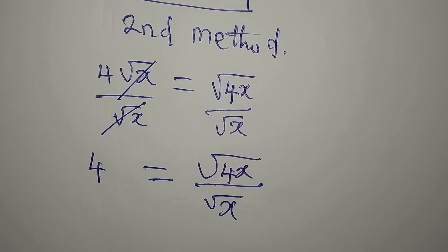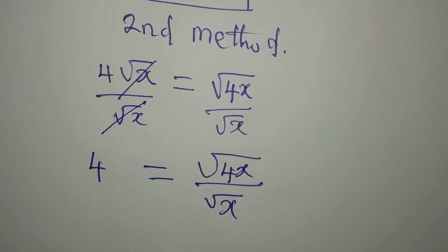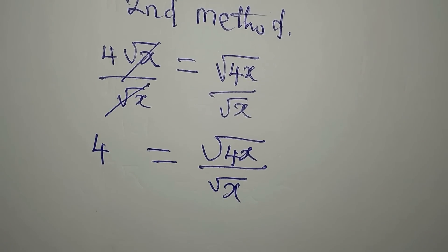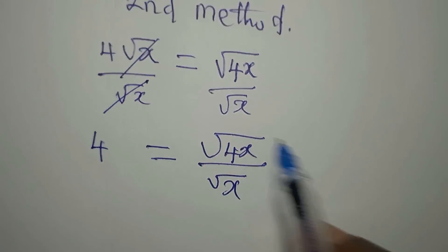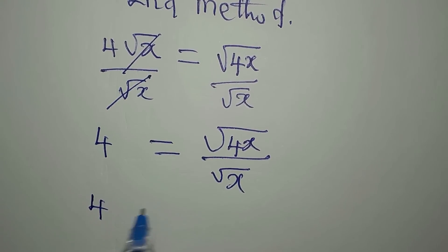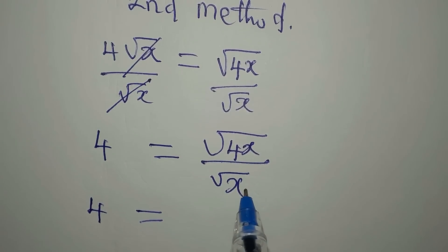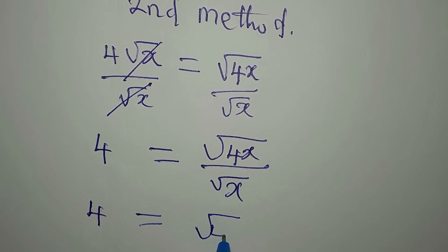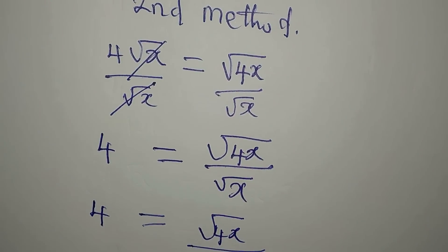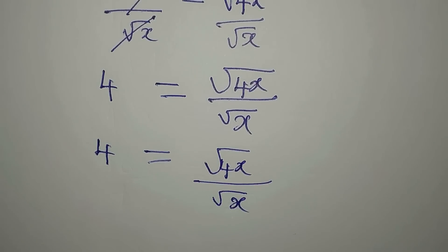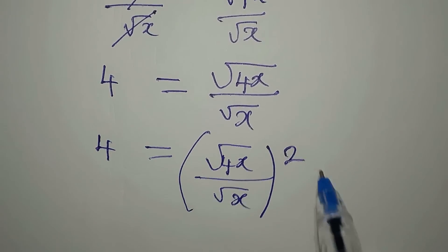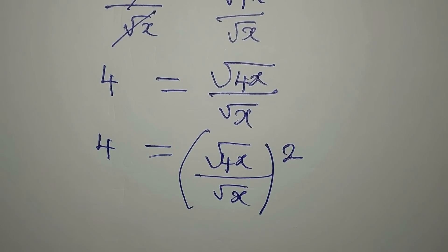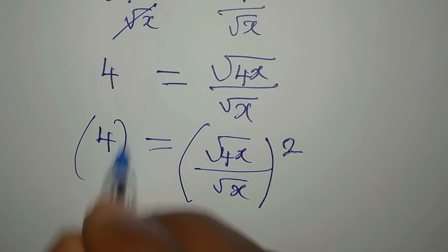So this is what we have. And then to also continue with this, we are going to combine these two and simplify. So we have 4 to be equal to square root of 4x over square root of x. Now, if I square this, this square is for both numerators. Then I will equally square this.